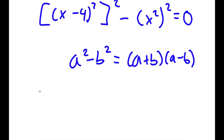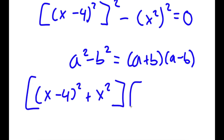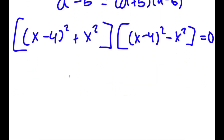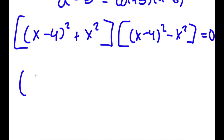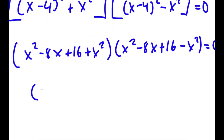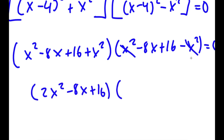This equals x minus 4 squared plus x squared times x minus 4 squared minus x squared, equal to 0. Expanding: x squared minus 8x plus 16 plus x squared times x squared minus 8x plus 16 minus x squared equals 0. This gives 2x squared minus 8x plus 16 times negative 8x plus 16 equals 0, giving two equations.